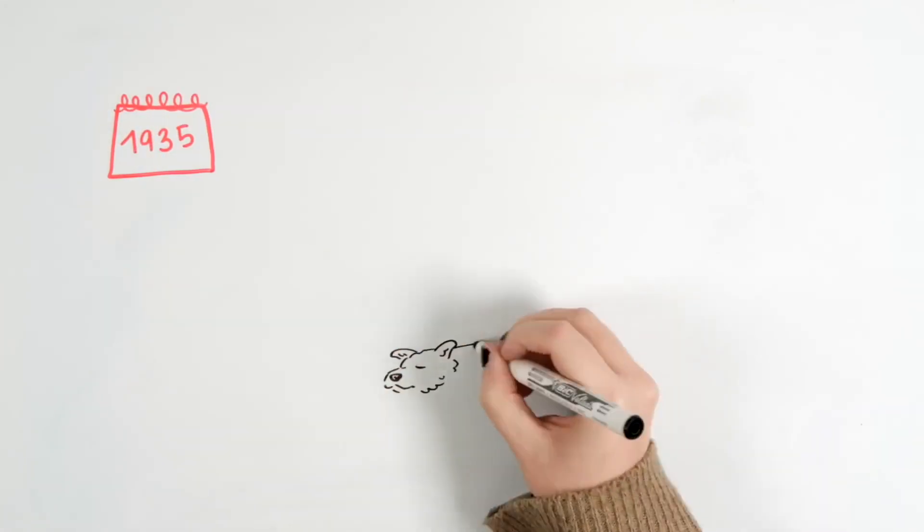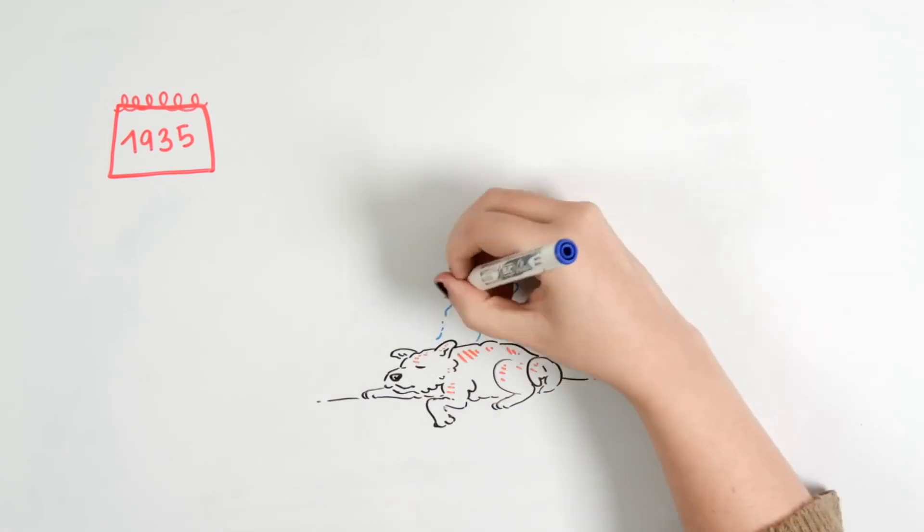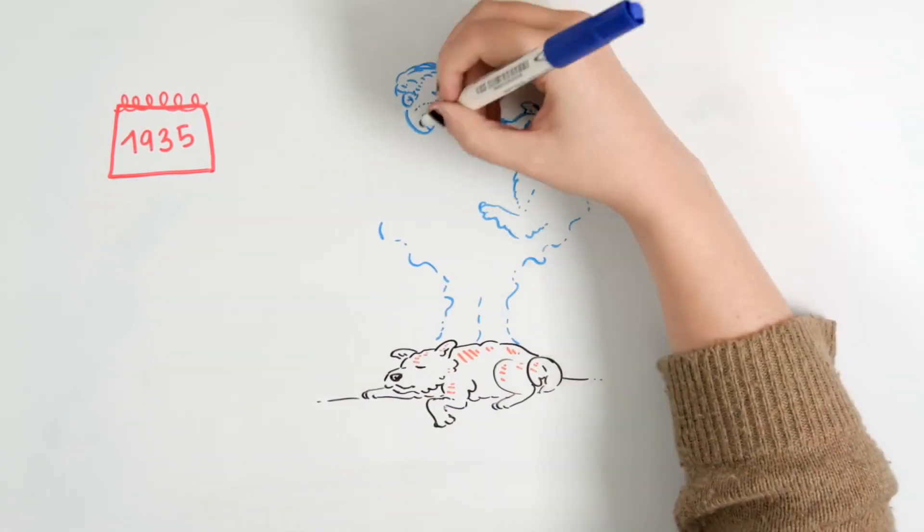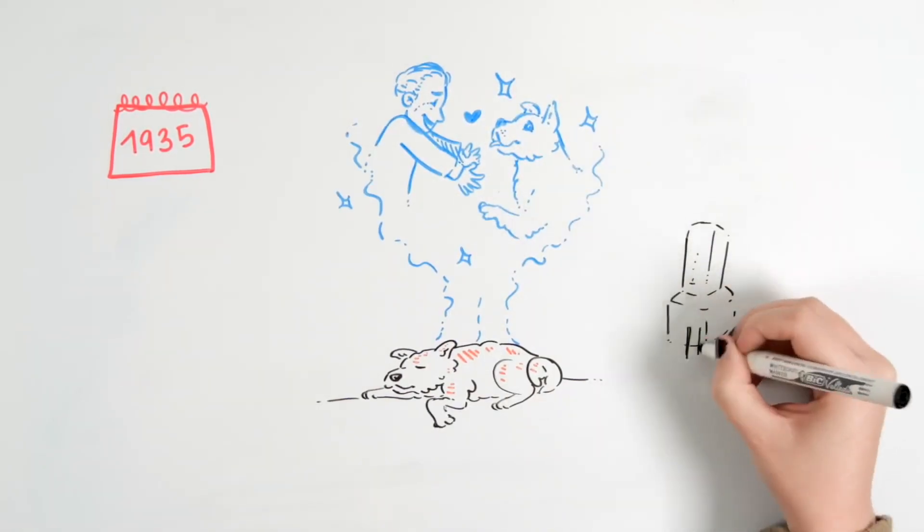A year later, on March 9, 1935, Hachiko died at the station 10 years after saying goodbye to his owner in that same place. He had suffered from terminal cancer and a heart infection.